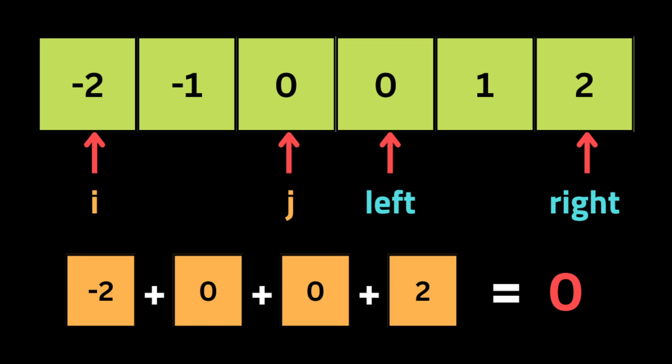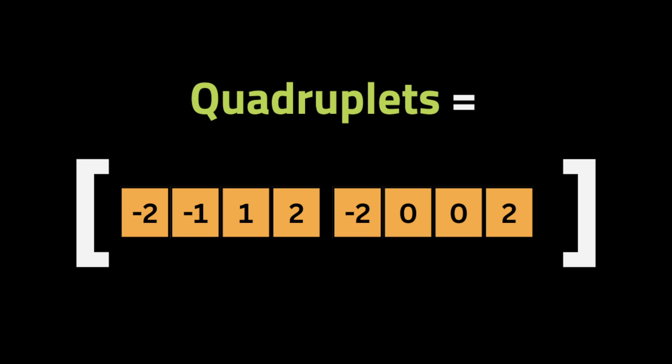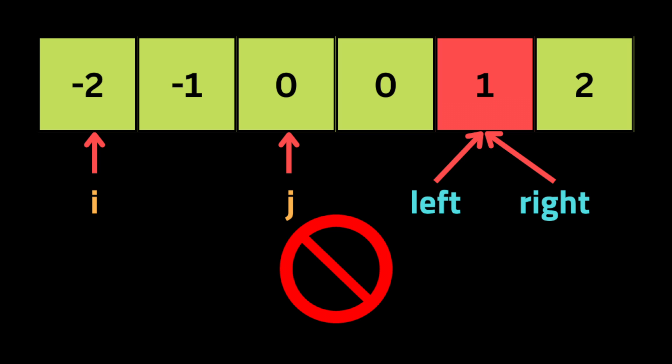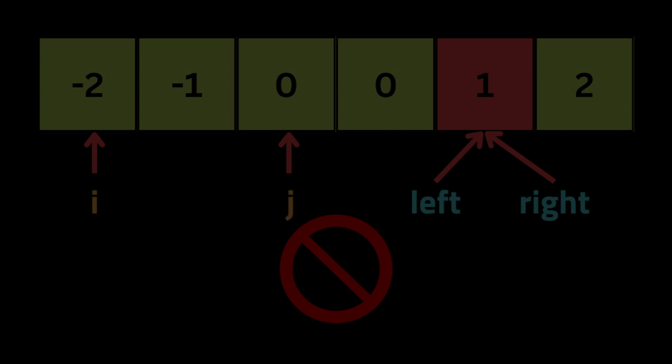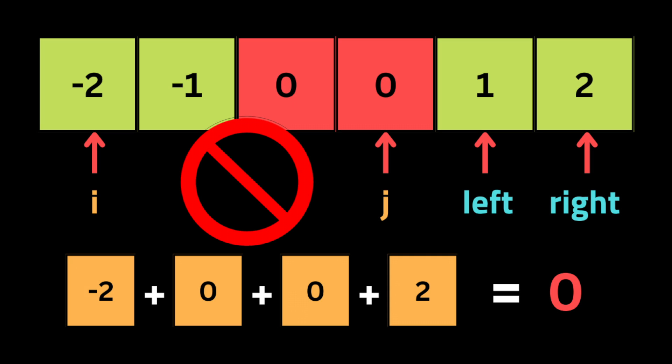We move to the next iteration: the inner index is reset and the right pointer is set back to the last element. The sum here equals the target, so we group the four values and push them to the quadruplets array, then move the left pointer forward and the right pointer backward. Once left meets or passes right, we stop iterating and move to the next iteration. To avoid reprocessing elements that have already been handled, we add a deduplication condition.